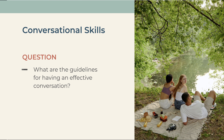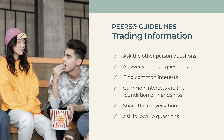Conversational skills are not soft skills — they are hard skills and they do take practice. We want to know the guidelines for having an effective conversation. Trading information is what people naturally do when having a good conversation. It involves the sharing or exchanging of thoughts, ideas, and interests. The most important goal is to find common interests so that you can find out if there are things you might enjoy talking about or doing together.